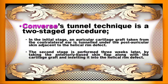For example, the Converse tunnel technique is a two-staged procedure. In the initial stage, an auricular cartilage graft taken from the contralateral ear is tunneled under the posterior skin adjacent to the helical rim defect. The second stage is performed 3 weeks later, by taking the anteriorly paired skin flap along with the cartilage graft and insetting it into the helical rim defect.